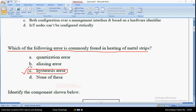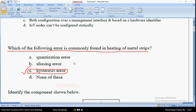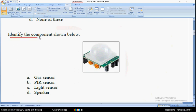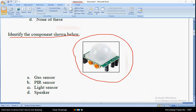Coming to the third question: identify the component shown below. What does this figure represent? It is representing a PIR sensor, that means option B. So mark option B as the correct answer for the third question.